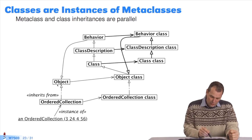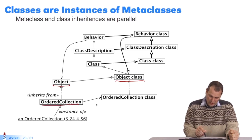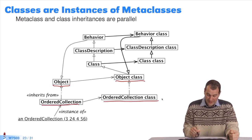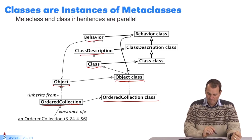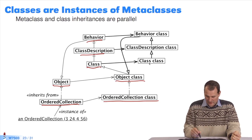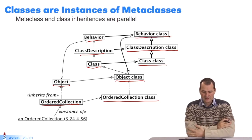Classes are instances of metaclasses. If object is an instance of a class named object class, and likewise for ordered collection, the same applies to class, class description, and behavior. So, class is an instance of class class, and class description is an instance of class description class.